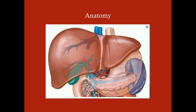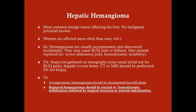The hepatic hemangioma is the most common benign tumor affecting the liver, and there is no malignant potential. Women are affected more often than men at about a four-to-six-to-one ratio. Symptoms are generally absent — these are usually discovered coincidentally on imaging such as CT or MRI done for another reason. If symptoms do occur, it's usually right upper quadrant pain or fullness. It can rupture, though not quite as often as the hepatic adenoma.